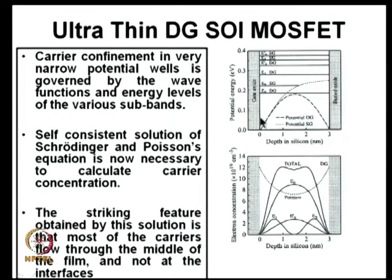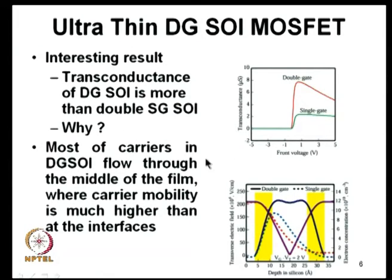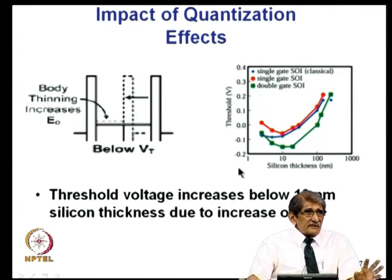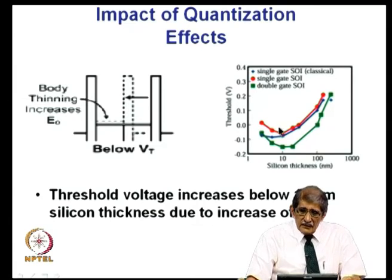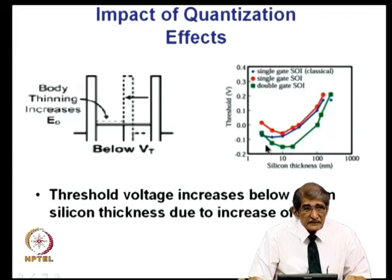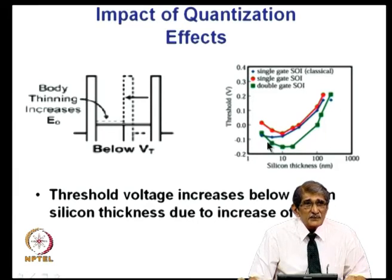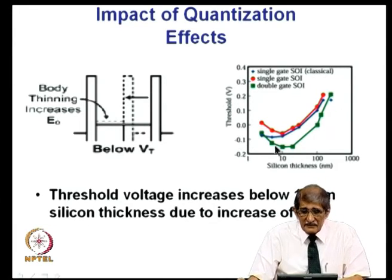To re-emphasize: in single gate versus double gate, the electron concentration and electric fields are different. In double gate operation with both channels inverted, electric field in the transverse direction is small, so electrons are less scattered, giving better transconductance and current — much more than single gate operation. When you keep on reducing the channel thickness, threshold voltage keeps falling. But when you go to thicknesses like 10 nanometers and below, threshold voltage begins to increase.